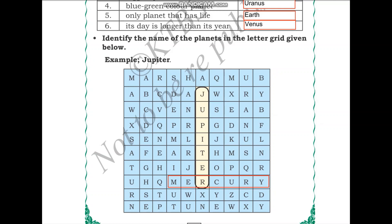Next, let us search for Venus. You should search for V. Here is Venus. Next, let us see if we can find Earth. We have to search for the letter E. Here is Earth.